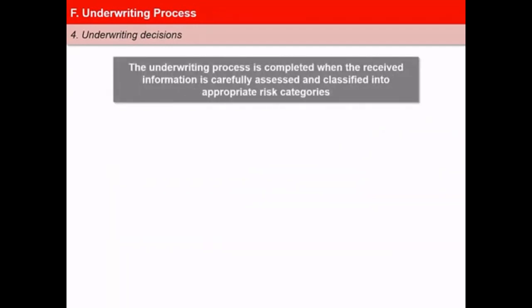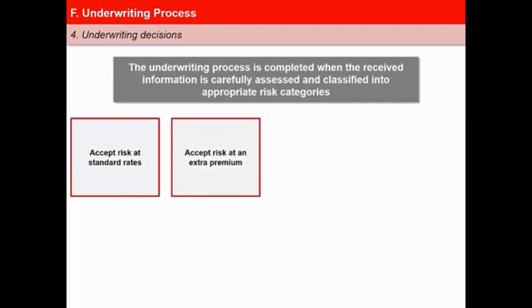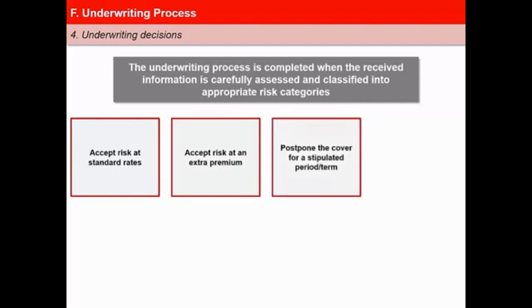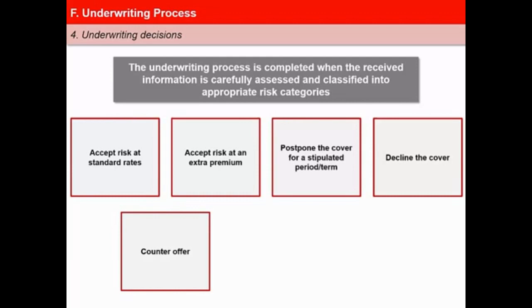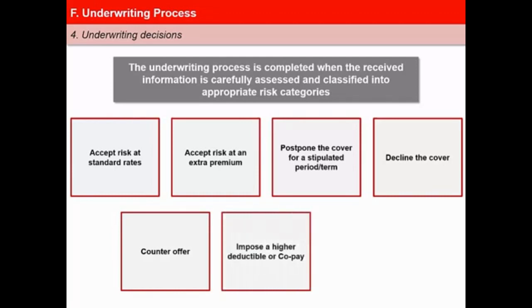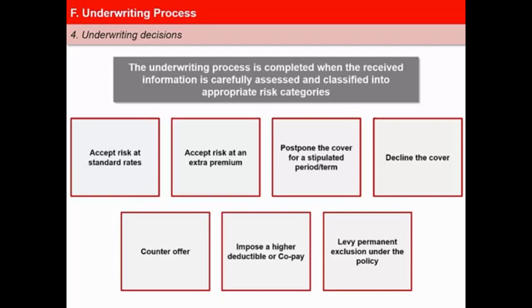The underwriting process is completed when the received information is carefully assessed and classified into appropriate risk categories. Based on the discussed tools and his judgment, an underwriter classifies the risk into the following categories: first, accept risk at an extra premium or loading, though it may not be practised in all companies; third, postpone the cover for a stipulated period; fourth, decline the cover; fifth, counter-offer, which is either restrict or deny part of the cover; sixth, impose a higher deductible or co-pay; and seventh, levy permanent exclusions under the policy.